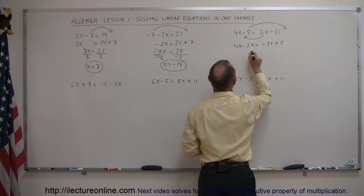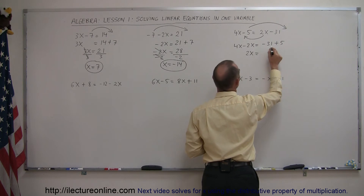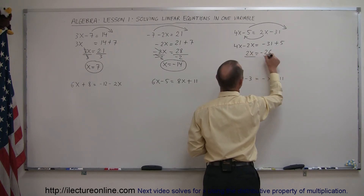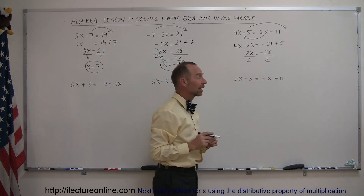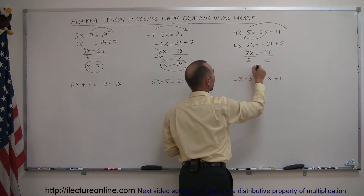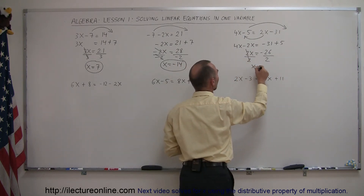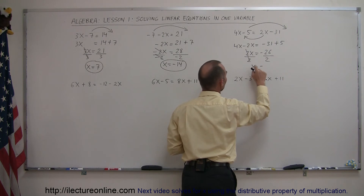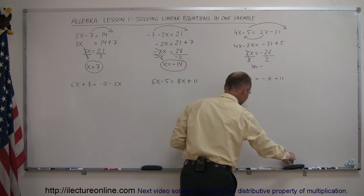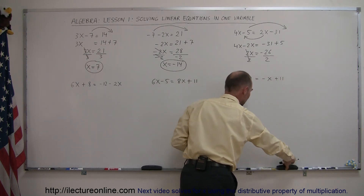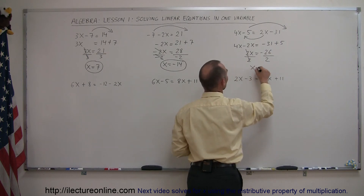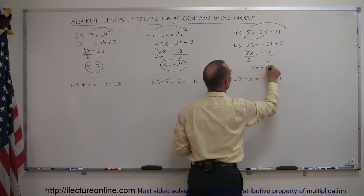Combining like terms: 4X minus 2X is 2X, and that equals minus 31 plus 5, which is minus 26. The last step is to divide both sides by the numerical coefficient in front of the X. The 2's cancel out and we get X equals minus 13.